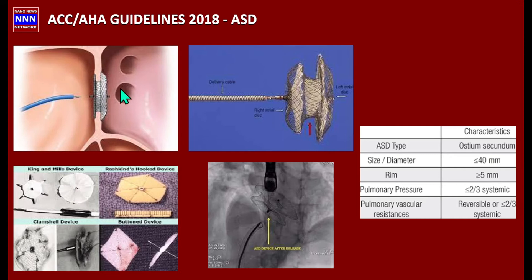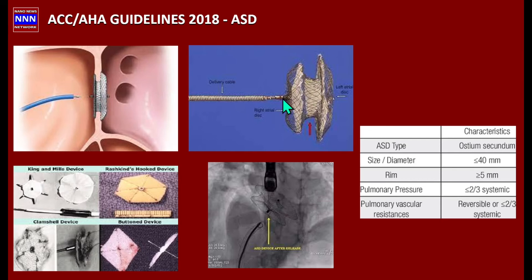Regarding device closure, the devices have evolved over time. The most commonly used device today has a left atrial disc and a right atrial disc that are compressed together, closing the gap in the defect. These two discs sandwich the atrial septum on either side of the defect.